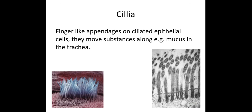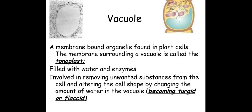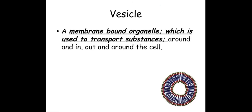We have cilia, which can be found on eukaryotic cells — these are small, finger-like appendages which move substances. In plant cells there is a vacuole, which is surrounded by a tonoplast and can become flaccid or turgid due to the movement of water. We also have vesicles, which are membrane-bound organelles used to transport substances.